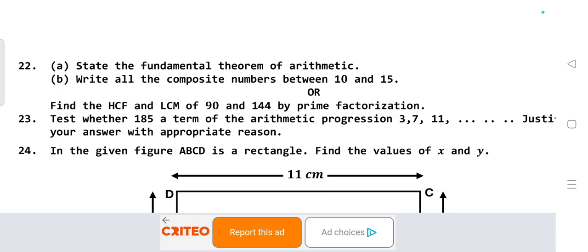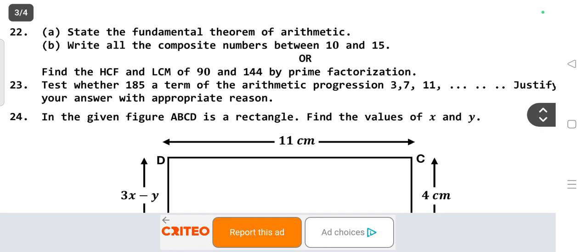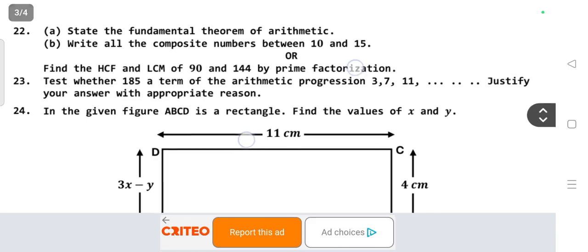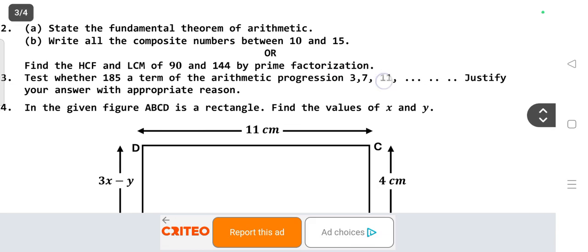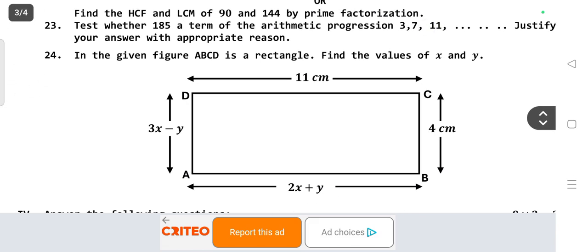Question number 22: State the fundamental theorem of arithmetic. Write all composite numbers between 10 and 15. OR: Find the HCF and LCM of 90 and 141 by factorization method. Question 23: Test whether 185 is a term of the arithmetic progression 3, 7, 11. Justify your answer with appropriate reason. In the given figure, ABCD is a rectangle, find the value of x and y.